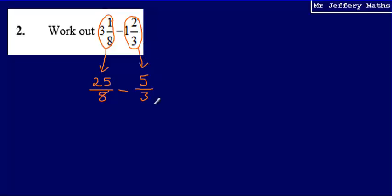So all that's now left for me to do is to subtract these improper fractions. The way that I like to do this is I'm going to write out equivalent fractions to 25 eighths and 5 thirds, because at the moment I can't subtract these as they are because the denominators are different.